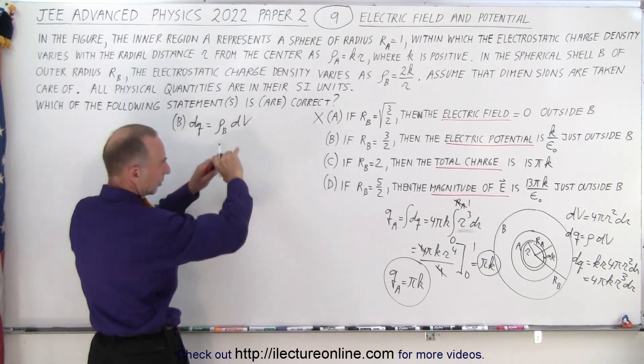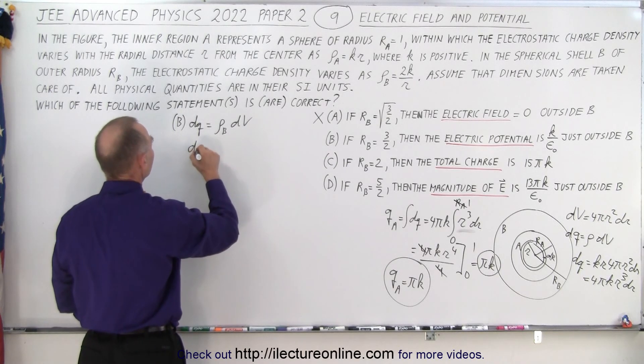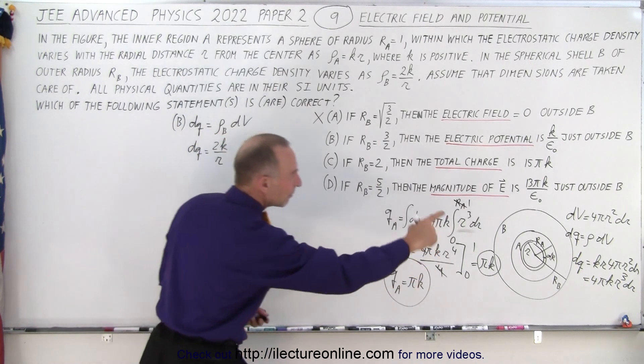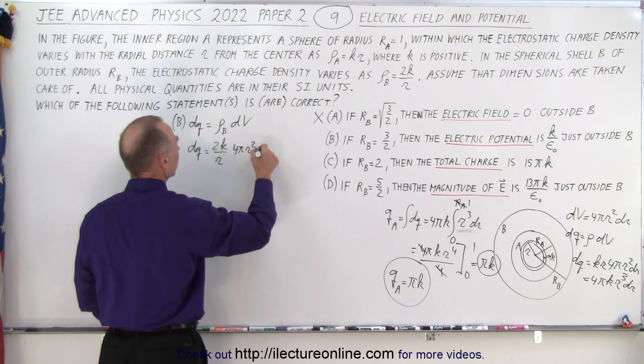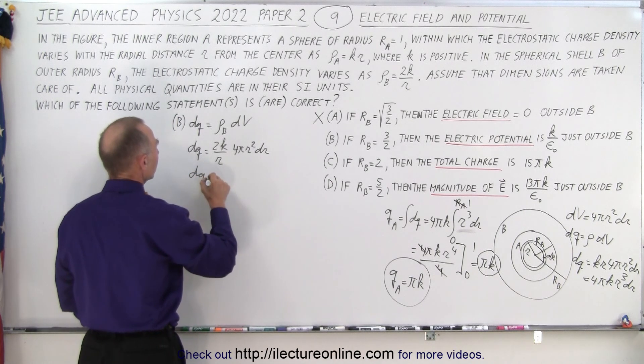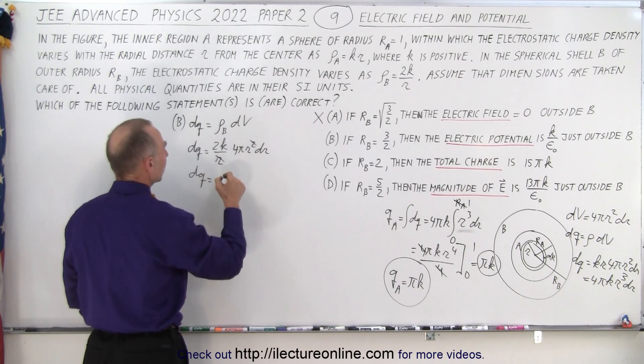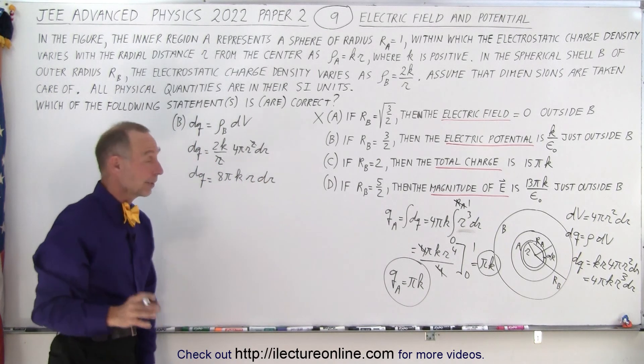So we can say that dQ is equal to the density of B times dV. Now dV remains the same, because we still take a spherical shell. So dQ is equal to 2k over r times dV, and dV is 4 pi r squared dr. So that means that dQ is equal to, one of the r's cancels out, and we end up with 8 pi k r dr.